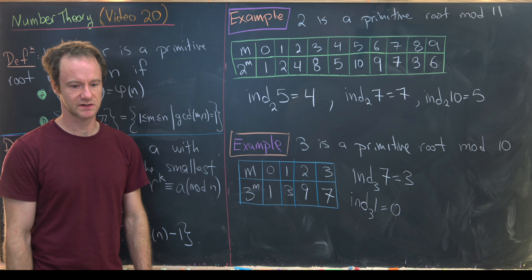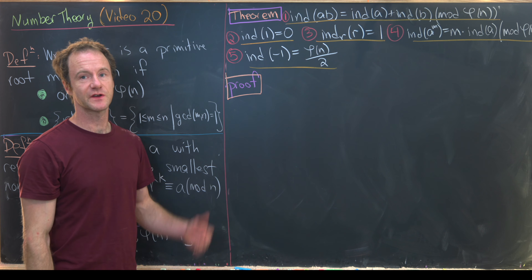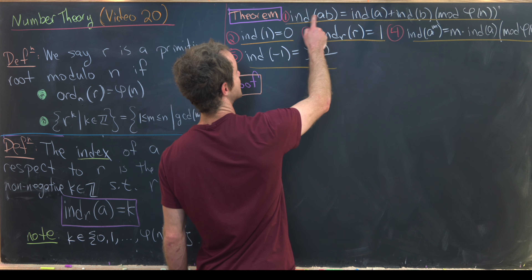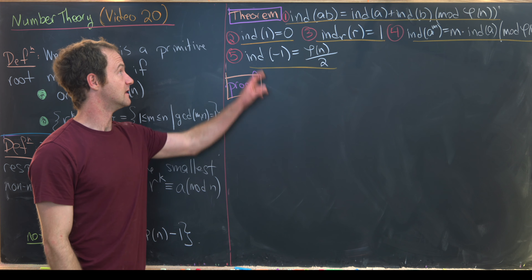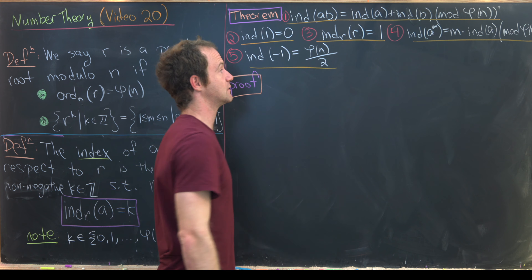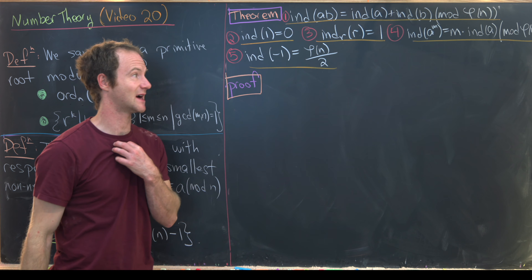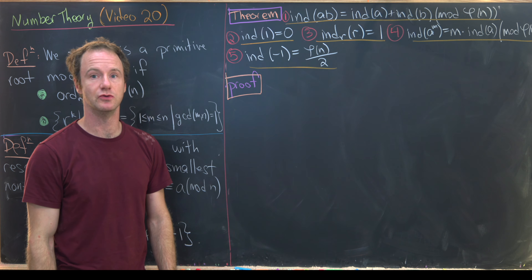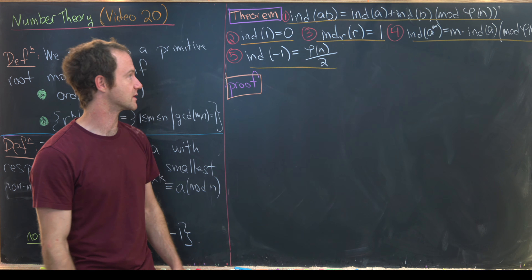Now let's prove a nice result drawing a parallel between the index and the logarithm. The theorem states: (1) ind_r(ab) ≡ ind_r(a) + ind_r(b) mod φ(n); (2) ind_r(1) = 0; (3) ind_r(r) = 1; (4) ind_r(a^m) ≡ m·ind_r(a) mod φ(n); (5) ind_r(−1) = φ(n)/2. Replacing 'index' with 'logarithm,' all these hold over the reals.